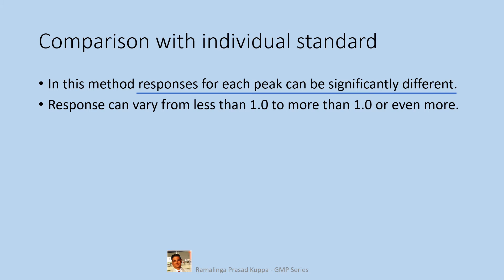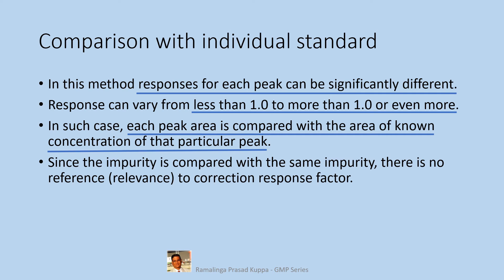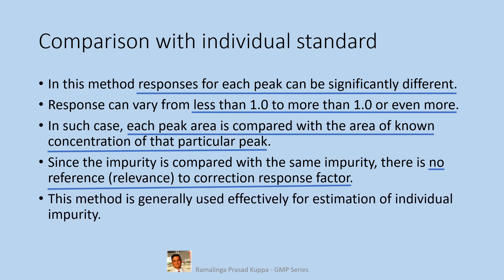Response can vary from less than one to more than one or even more. In such cases, each peak area is compared with the area of a known concentration of that particular peak. The response factor of each compound will obviously be the same as the response factor of that compound, so there will be no adverse impact on accuracy of the peak estimation. This method is generally used effectively for estimation of individual impurities, because the responses for each peak may not be the same for all impurities.